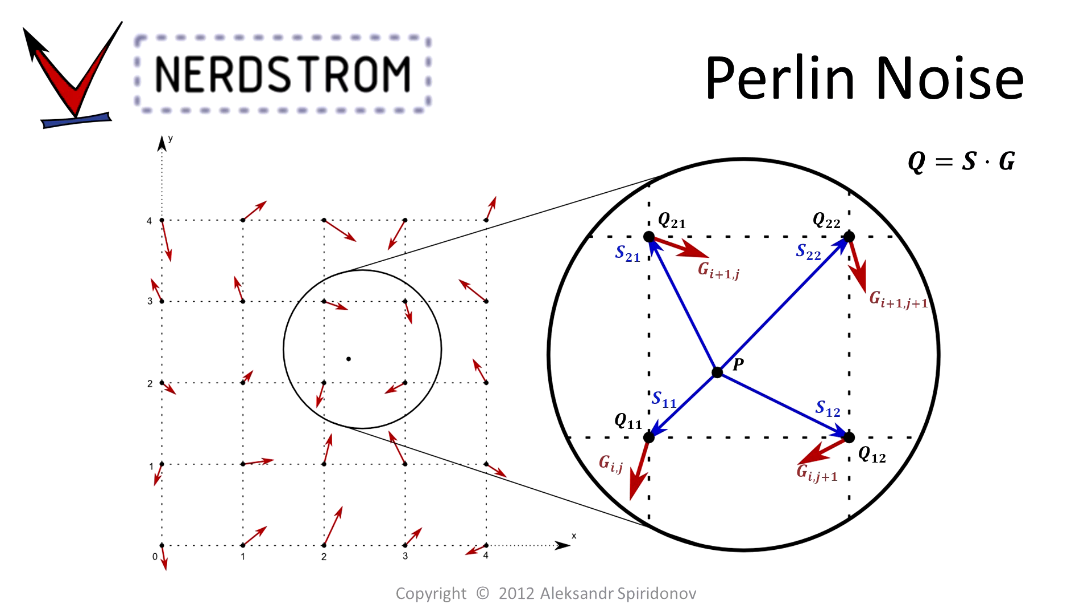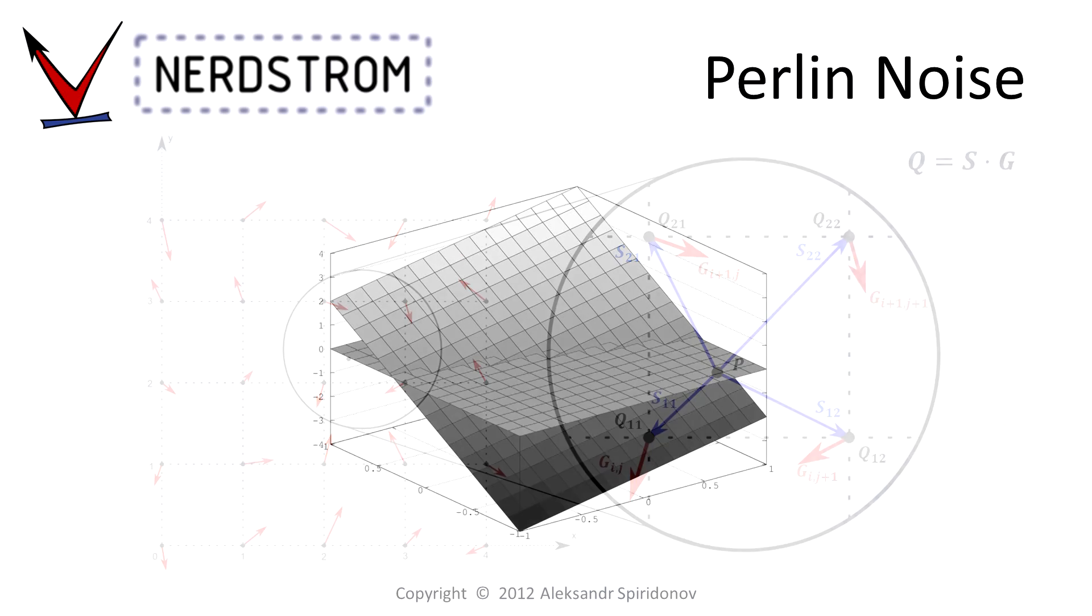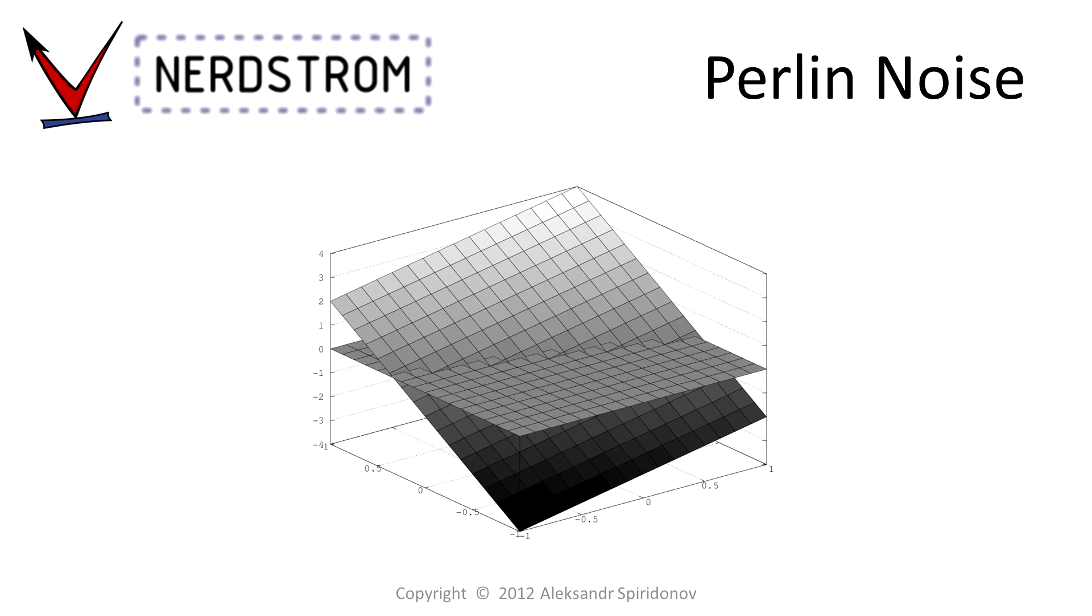Now, in case you're wondering what gradients I'm referring to, since all you see is a sample point in a vector field, consider just one gradient vector. If you take the dot product of the relative coordinates of all points around the gradient vector and the vector itself, you will obtain the heights of the gradient surface at those sample points as seen in this illustration.